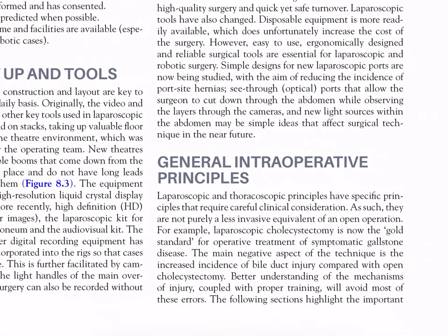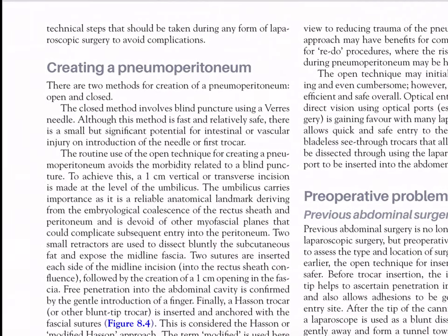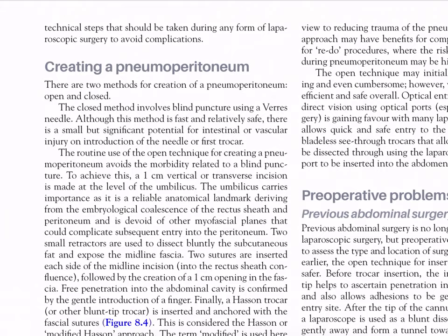General intraoperative principles: laparoscopic and thoracoscopic procedures have specific principles that require careful clinical consideration; they are not purely a less invasive equivalent of an open operation. For example, laparoscopic cholecystectomy is now the gold standard for operative treatment of symptomatic gallstone disease, but the main negative aspect of the technique is the increased incidence of bile duct injury compared with open cholecystectomy. Better understanding of the mechanisms of injury, coupled with proper training, will avoid most of these errors. The following sections highlight the important technical steps that should be taken during any form of laparoscopic surgery to avoid complications.